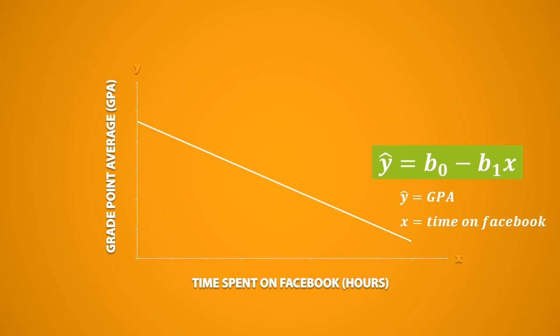In contrast, in this example, notice how x is now equal to the time on Facebook. And like before, b0 is always equal to the y-intercept, and b1 is always equal to the slope of the line. This time, the slope is pointing downwards, which is why we have a minus sign written on the formula.